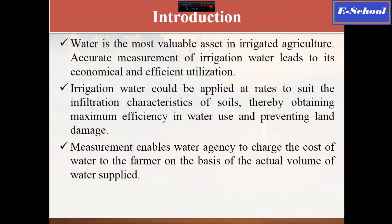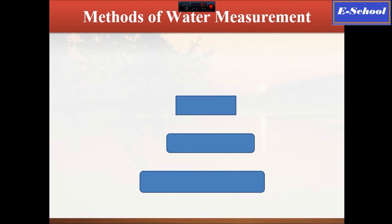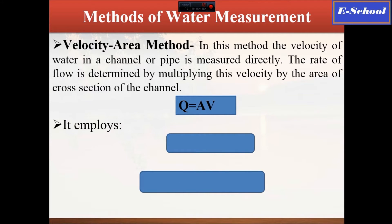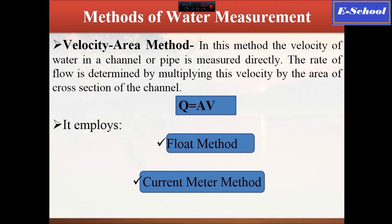Measurement of water enables us to apply water according to the needs of the soil and plants. The first method of water measurement is the velocity-area method. This method is governed by the simple discharge equation: Q is equal to area multiplied by velocity. This method implies two approaches: the float method and the current meter method.